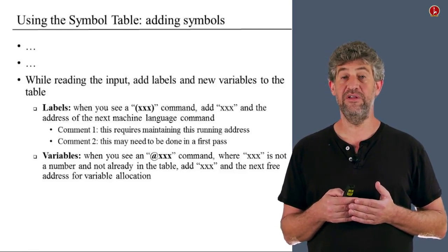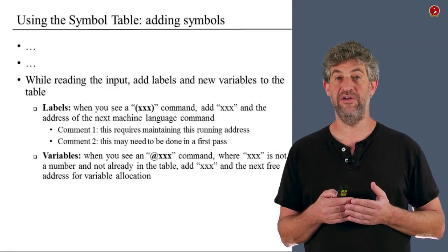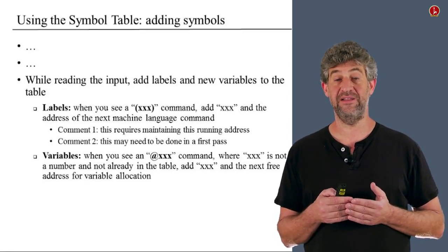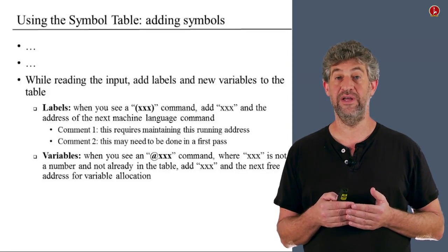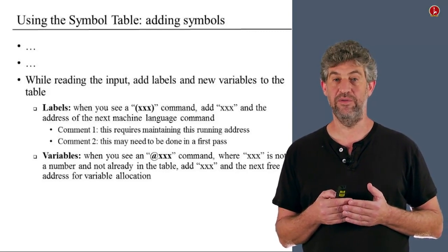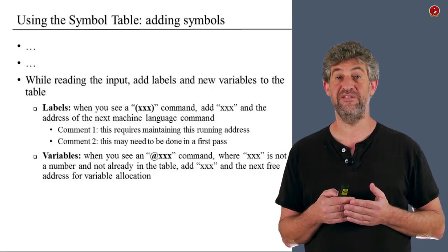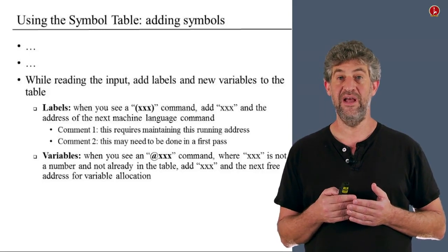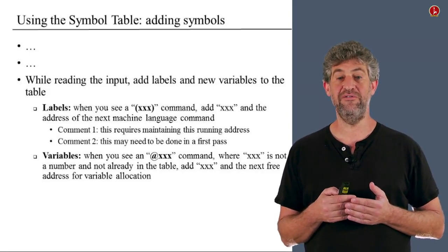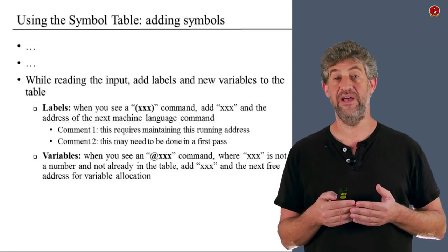For variables, the situation is slightly different. Whenever we see an A command with a new variable we don't recognize yet, we know it's not a label because all labels were already entered in the first pass. If it's not in the symbol table, it means we have a new variable name, and we need to allocate it the next available address. The addresses allocated to variables start at 16 and keep going: 17, 18, and so on. So whenever we see a new symbol in an A command, we allocate a new place for it and enter it into the table.